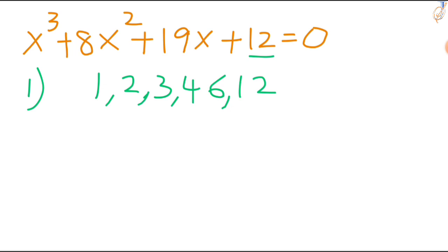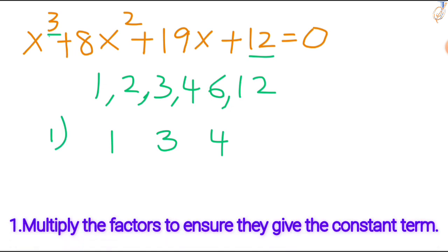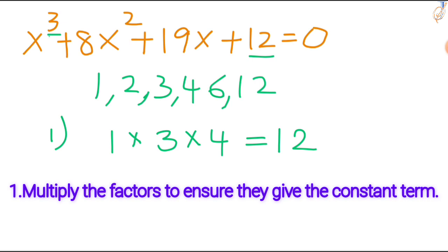Among these factors, since this is a trinomial, that means you should get 3 factors. So you should take 3 numbers. I am taking 1, 3, 4. Now you have to check 3 conditions. Condition 1: multiply the factors to ensure they give the constant term. When you multiply these numbers, 1 times 3 times 4 equals 12. So it is the same as your constant value. So your first condition is satisfied.